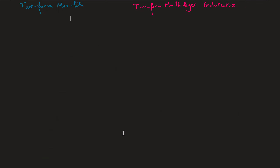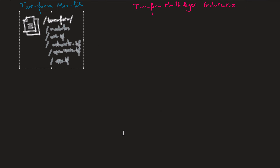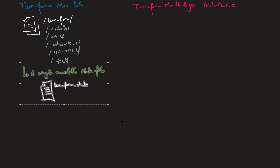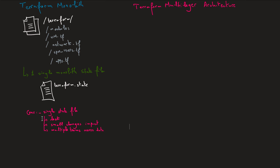With the Terraform monolithic approach, we would have one or multiple Terraform configuration files — for modules, virtual machines, network, SPN, users, and applications — all part of the same folder. This means Terraform will produce one single Terraform state file, and that is a huge issue. That state file will be a single point of failure. Each time we want to apply new infrastructure, that state file will be locked, so other teams cannot use it and cannot deploy in parallel. They need to wait until that file is unlocked, then they can deploy their infrastructure.